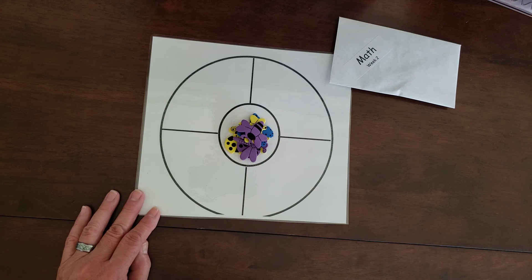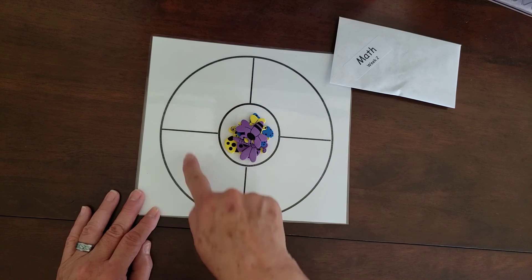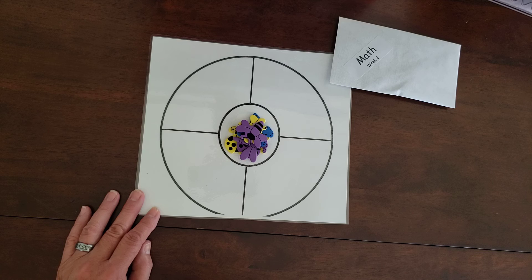Sorting is putting things together because we call them attributes. That's the way they look or the way they're shaped or the color that they are. Those are their attributes. And we sort them into the quadrants on our sorting mat because they're the same.